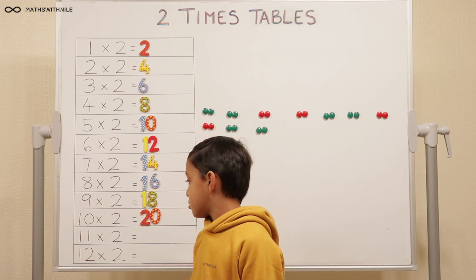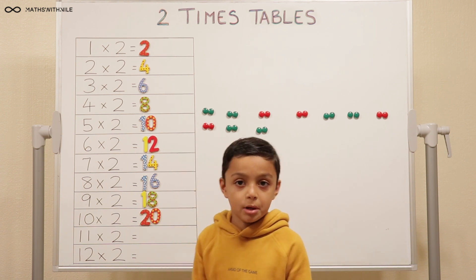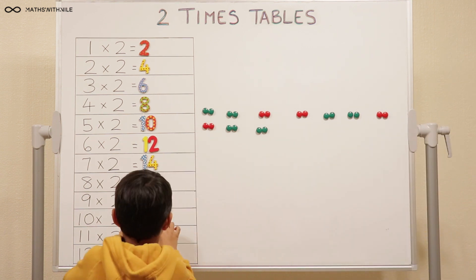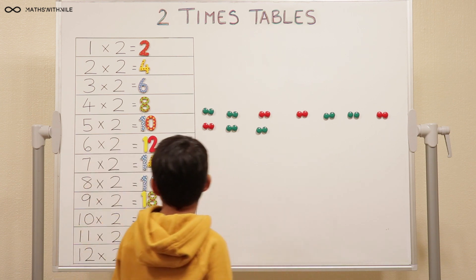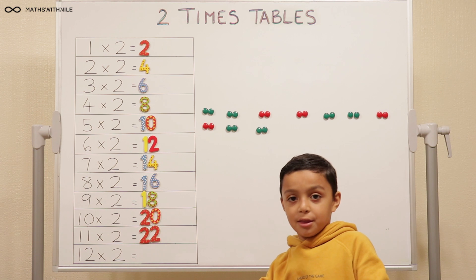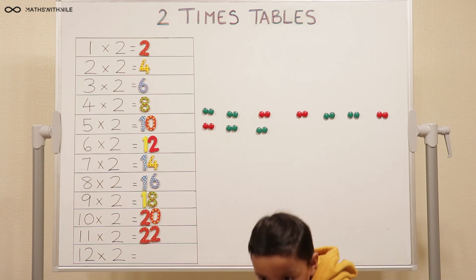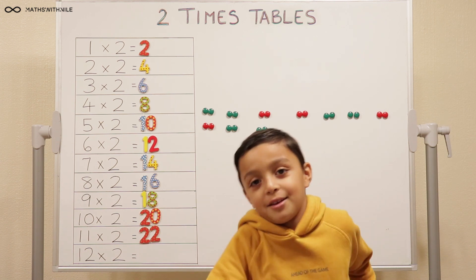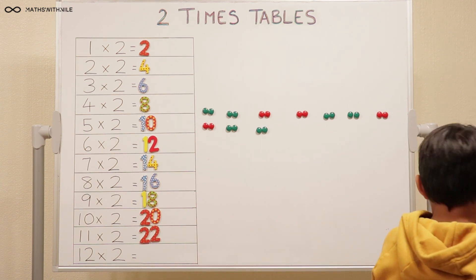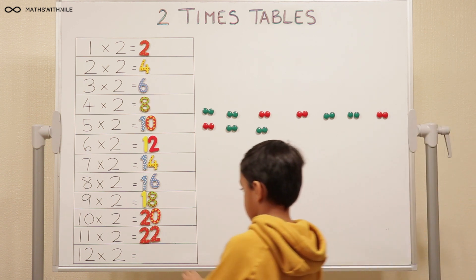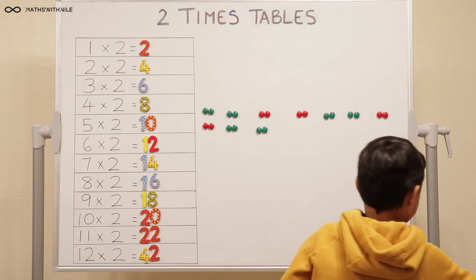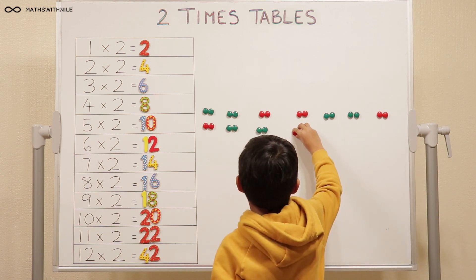Eleven times two. Twenty, twenty-one, twenty-two. Twenty-two. Don't forget to put that eleven group of twos in your counters. Eleven group of twos.